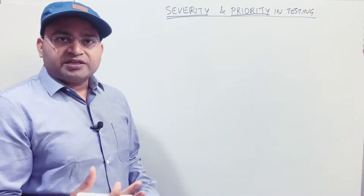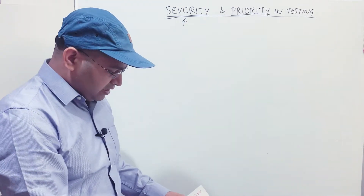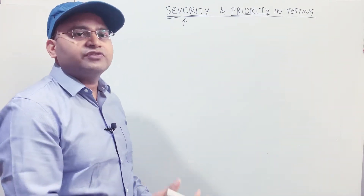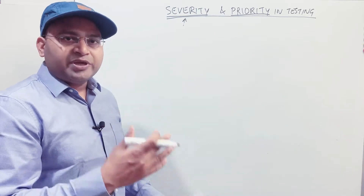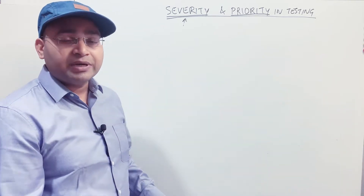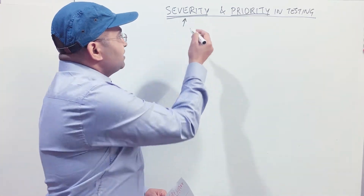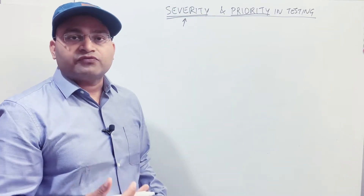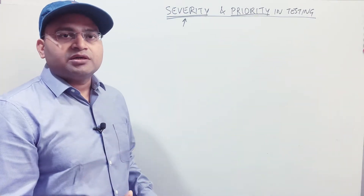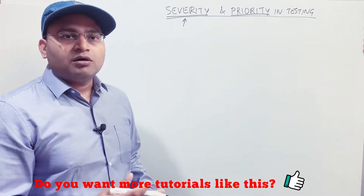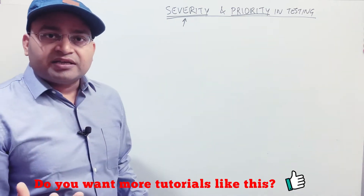When you identify a defect in any software testing project, as a software tester you first think about assigning the severity. Severity is basically how bad the defect is — what is the impact of the defect on the software. Is the defect very bad? Is it impacting the software very badly? Is it breaking the software? Severity is assigned by the software tester, because that person knows whether the defect is breaking the overall functionality or blocking them from progressing to further steps in the testing.